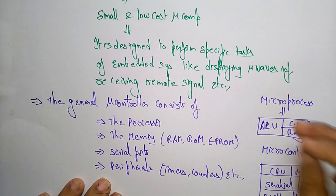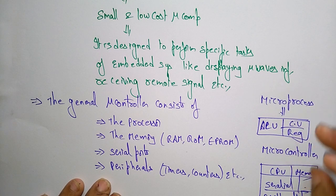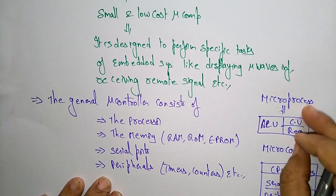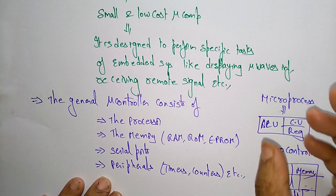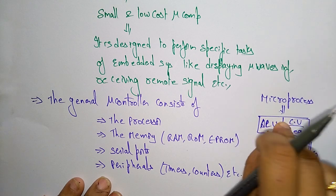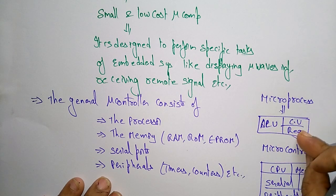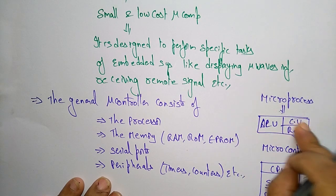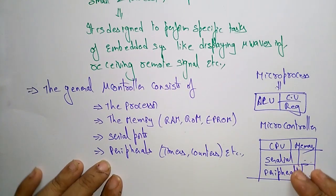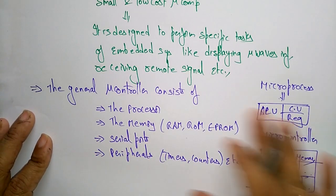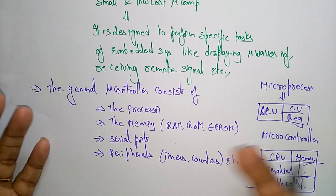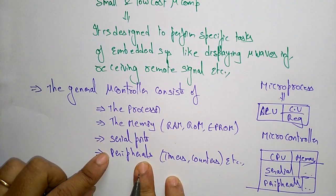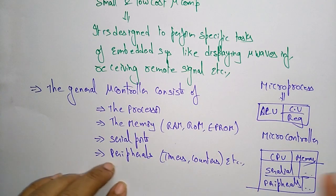So this is the difference between the microprocessor and the microcontroller. A microprocessor has only the processing devices — the ALU is used to perform calculations, the registers are used to store data, and the control unit monitors everything. Whereas the microcontroller is integrated with all components — you can call it an embedded system, embedded with the processor, memory, serial port, and peripherals.